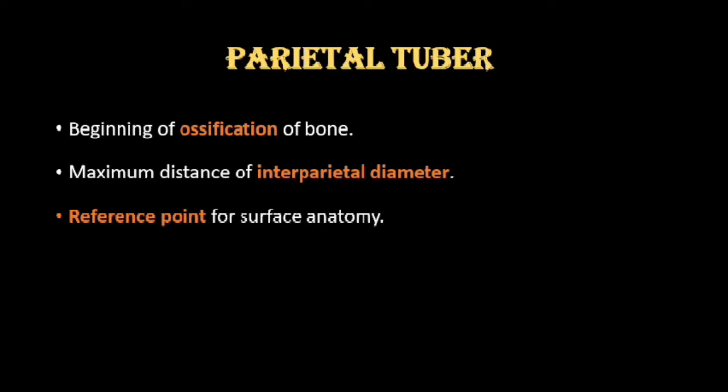That means the ossification of the parietal bone starts from the parietal tuber. Then, this occupies the maximum distance of the interparietal diameter — so when you measure the distance from one parietal bone to the other, connecting the two parietal tubers, the maximum distance is occupied by the parietal tuber. It also acts as a reference point for surface anatomy.